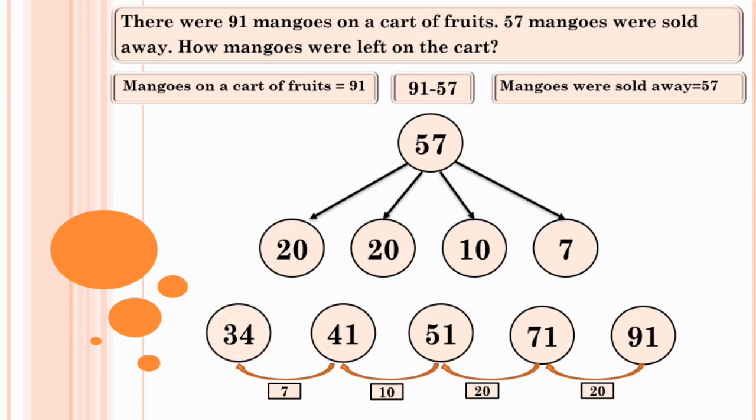There were 91 mangoes on a cart. 57 mangoes were sold away. Now, 34 mangoes were left on the cart.